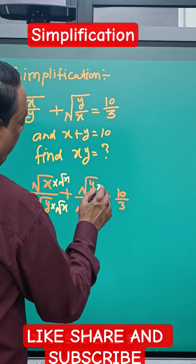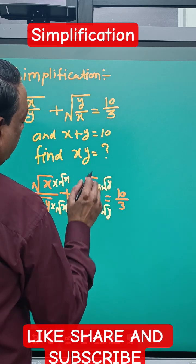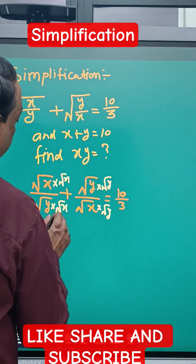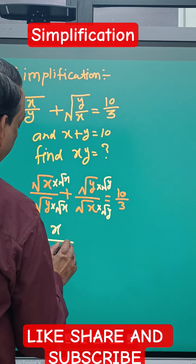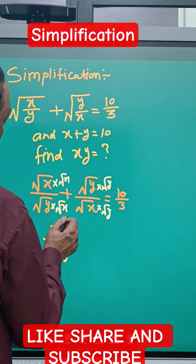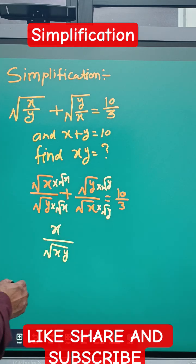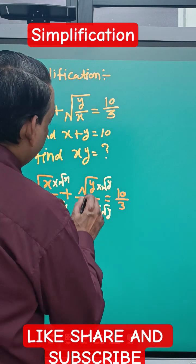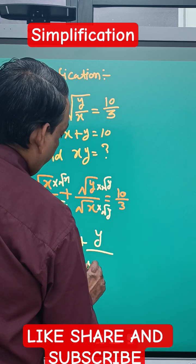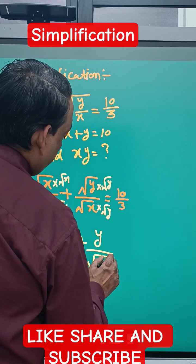√x times √x gives us x, and √x times √y gives √xy. Similarly, √y times √y gives y, and the denominator is also √xy. Now both denominators are the same.